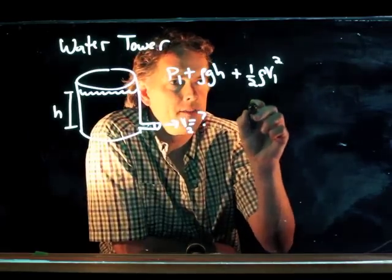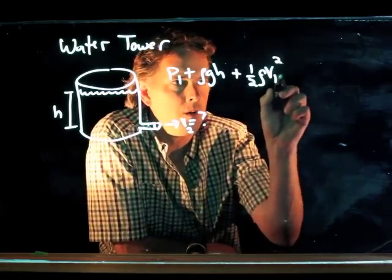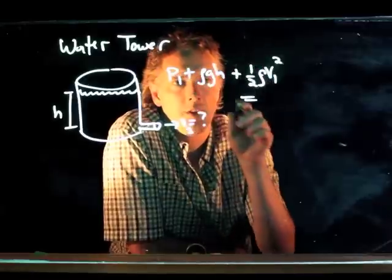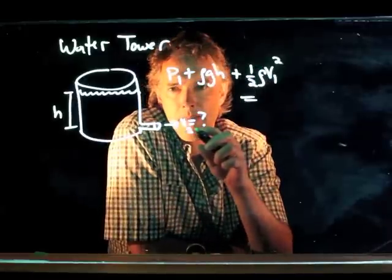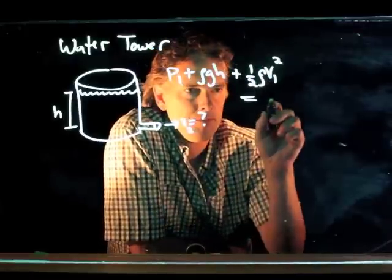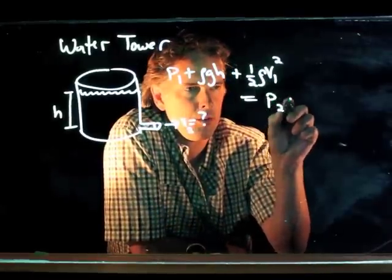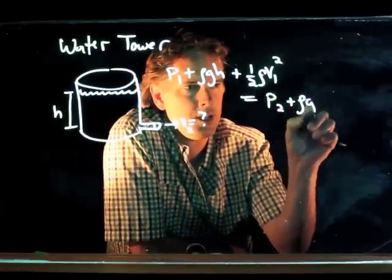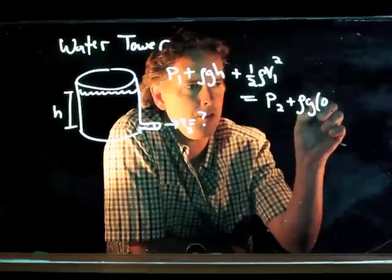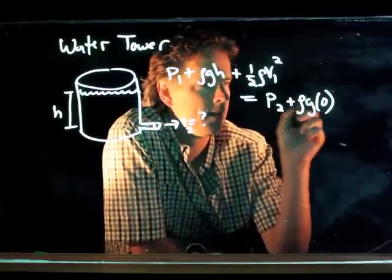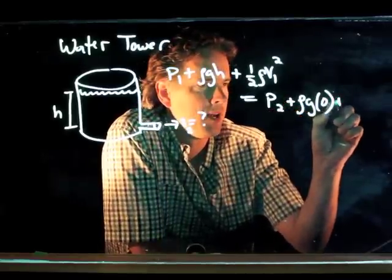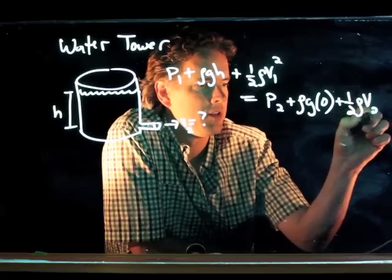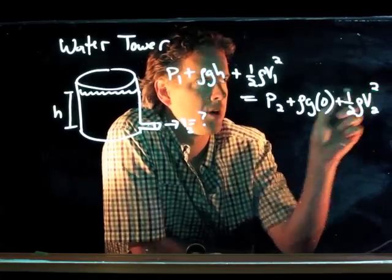That has to equal all of these terms at the bottom. So: pressure two plus rho g times zero — we're at zero height — plus one-half rho V2 squared.